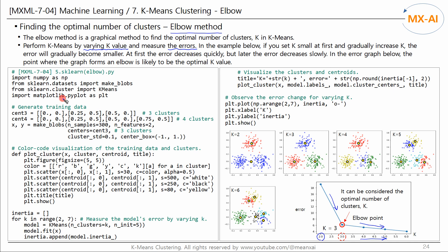Let's look at the code and results. Generate training data — you can generate data consisting of three or four clusters. First, we will generate data consisting of three clusters. Let's write a function to color code and visualize training data and clusters. We then train the k-means model by changing k from 2 to 6, measuring the error and storing it in a list.